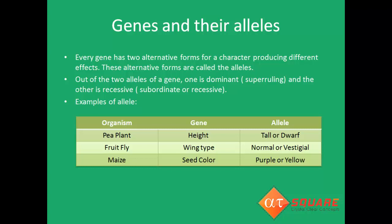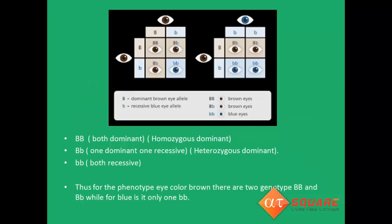Here are some more examples of genes and their alleles. For height in the pea plant, the two alleles are tall or dwarf. For wing type in fruit fly, the two alleles are normal or vestigial. For seed color in maize, the two alleles are purple or yellow. Let us take a look at the picture to gain a better understanding about a gene, its allele, and it being dominant or recessive.